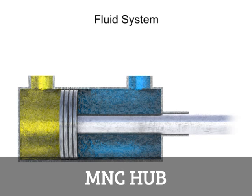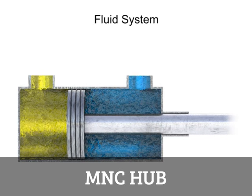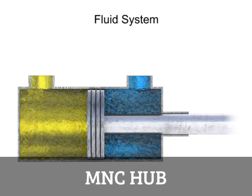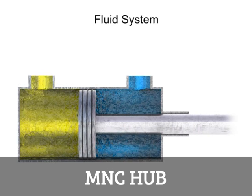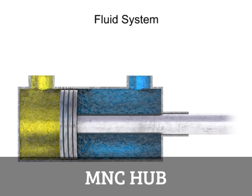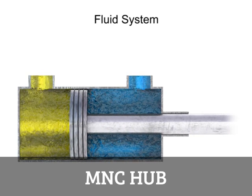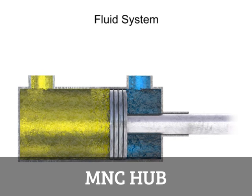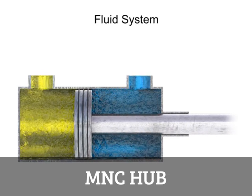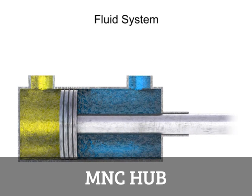The purpose of a fluid system is to transmit power from one location to another. Fluid power is converted to mechanical power by means of an actuator. Cylinder actuators deliver a linear push-pull motion via a rod and piston within a cylindrical tube.